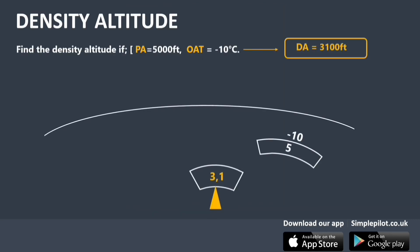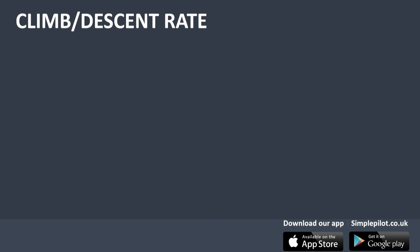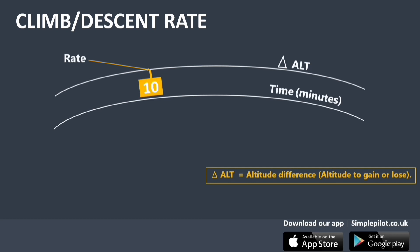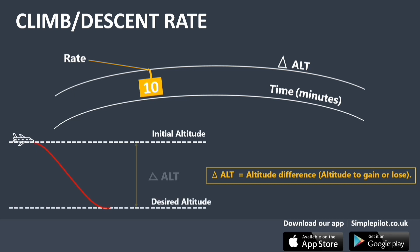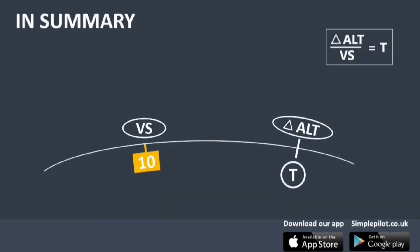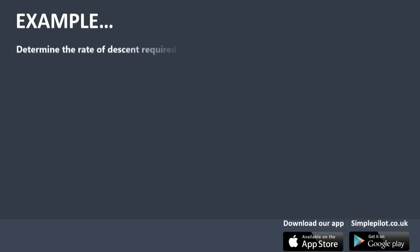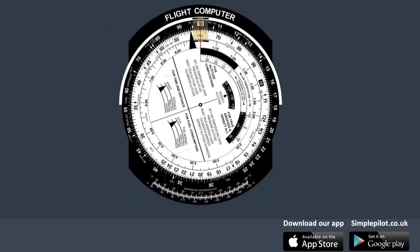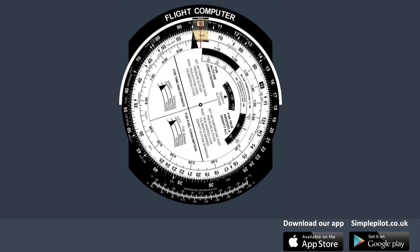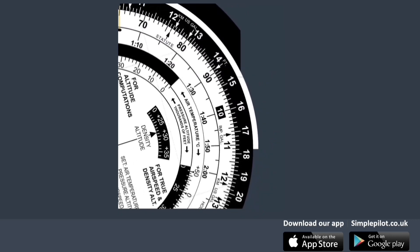Let's move on to the calculation of climb and descent rate. The index 10 should be used instead of the speed index. The rate of climb or descent is represented on the outer scale by the index 10, the altitude difference is on the outer scale, and the time in minutes is on the middle scale. Suppose we have to determine the rate of descent required to descend 8,000 feet in 5 minutes. We align the altitude of 8,000 on the outer scale with 5 minutes on the middle scale, then read the rate of descent at index 10 on the outer scale — which is 1,600 feet per minute.